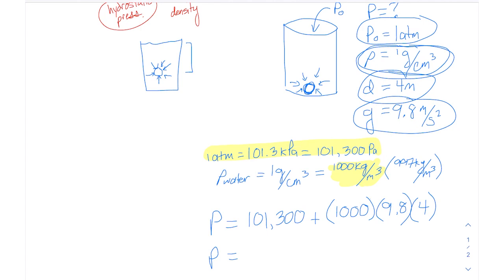And so when we do the math on that, we're going to get 140,500 pascals of hydrostatic pressure on this object down here at the bottom of our 4 meter tall open cylinder that is filled with water at sea level.